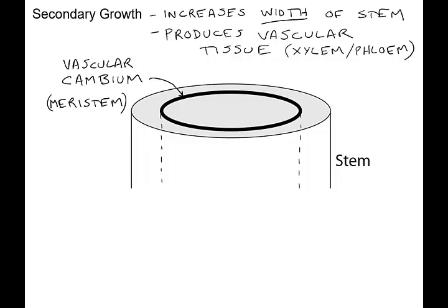The topic here is secondary growth, which increases the width of the stem. It's also important because it produces the vascular tissue, particularly the xylem and the phloem, that help water and nutrients move around inside the plant.